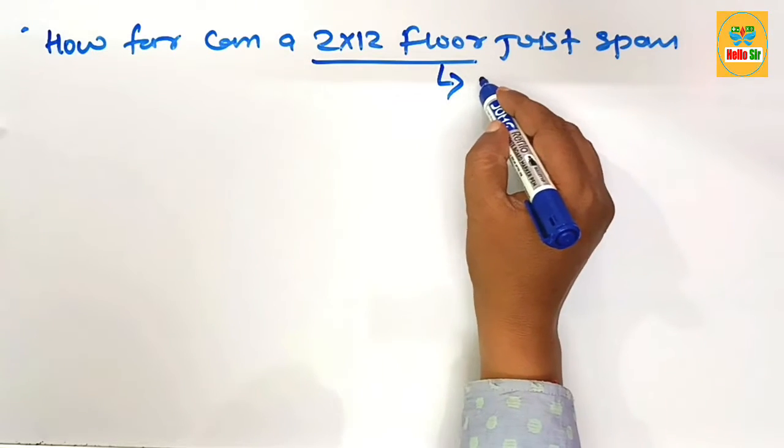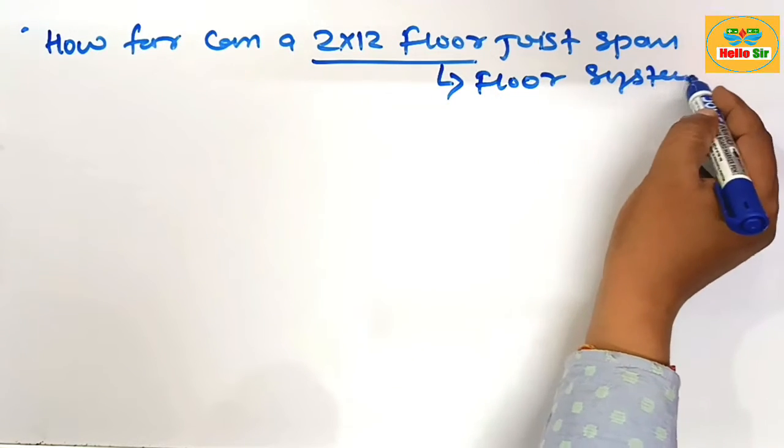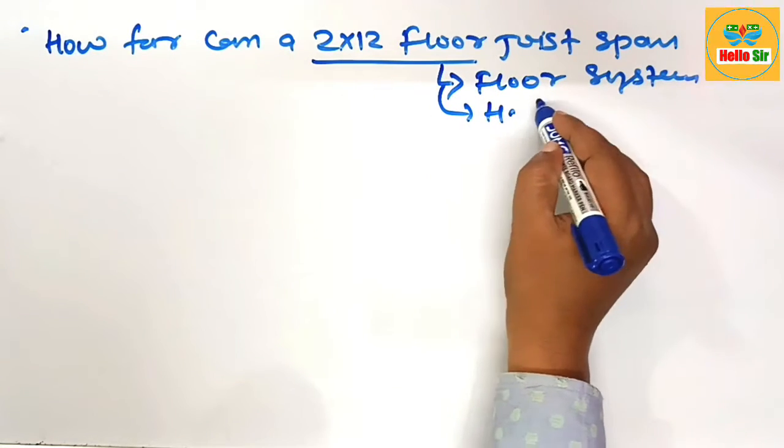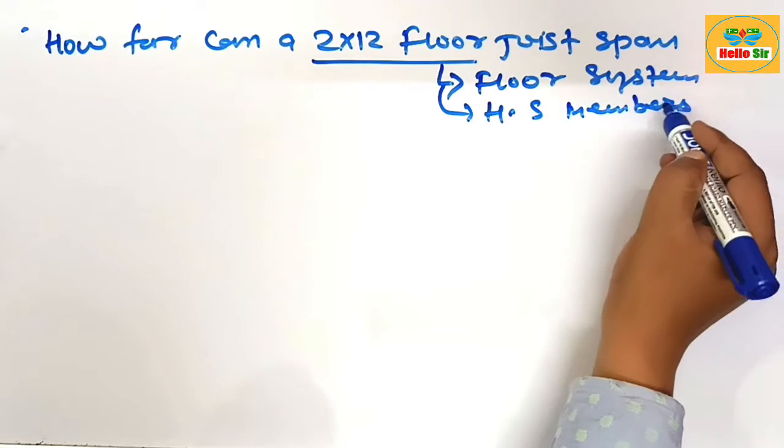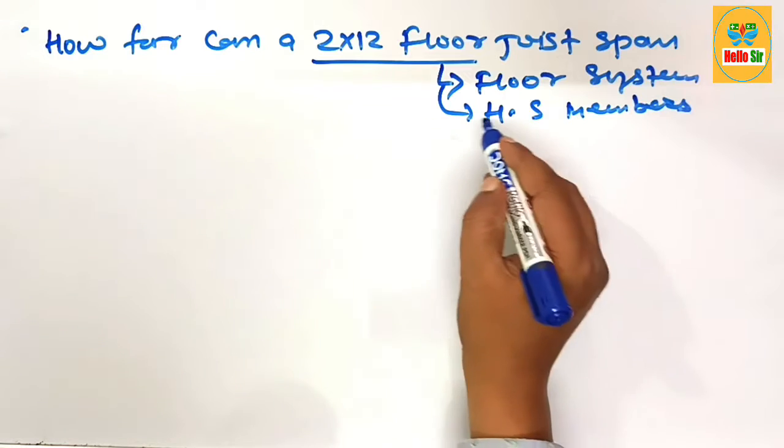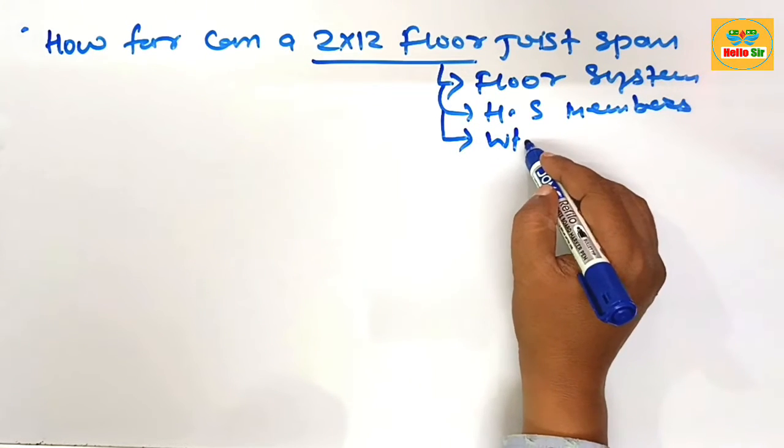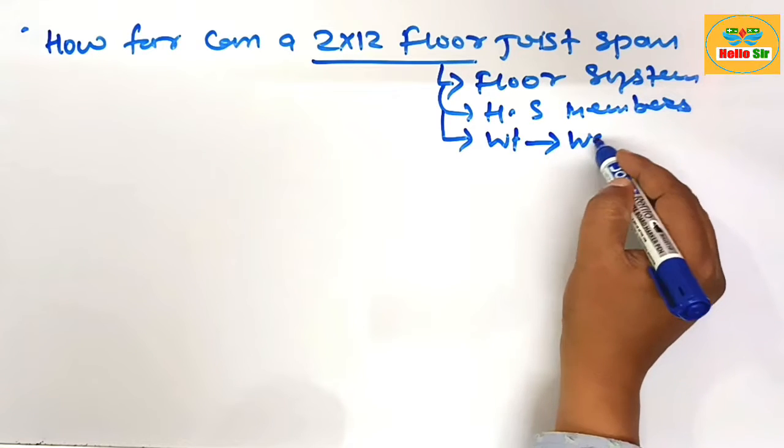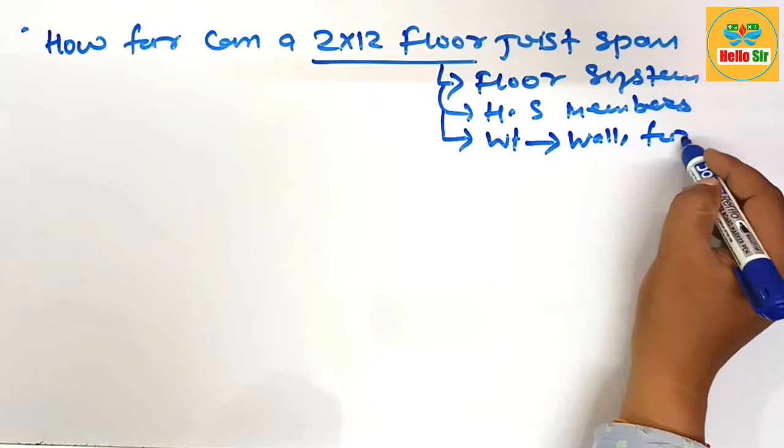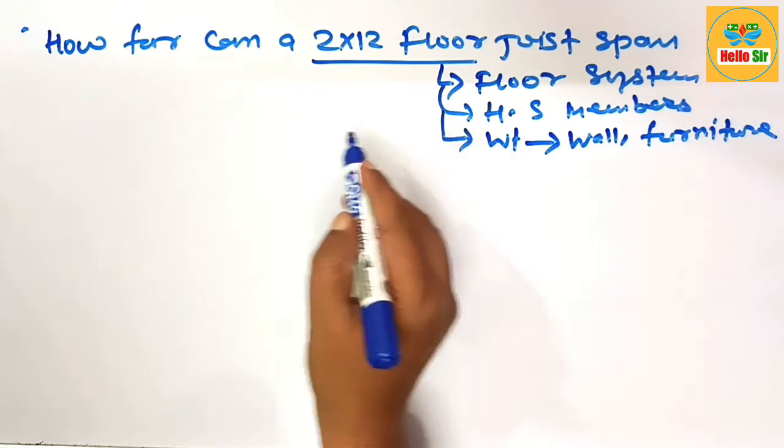You know that a floor joist is a part of the floor system. It is a horizontal structure member that spans between open space, connecting the beam structure and carrying the weight of everything inside the room like the weight of walls, furniture, different appliances, and the weight of people.